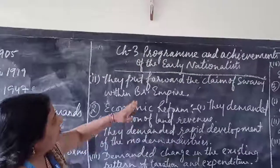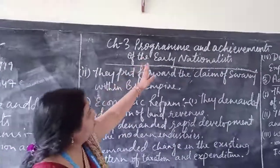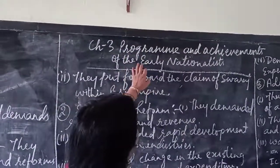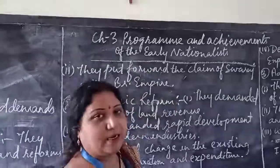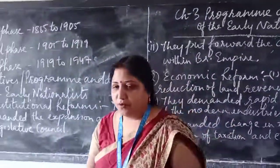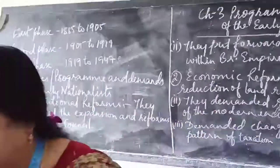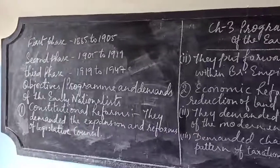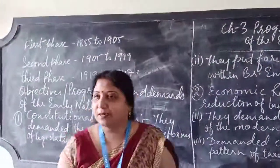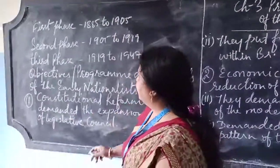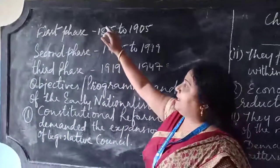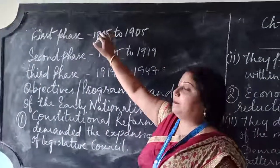Today we will start with Chapter 3: Program and Achievement of the Early Nationalists. Now before we begin with Early Nationalists, you have to understand that the Indian National Movement is divided into three parts.